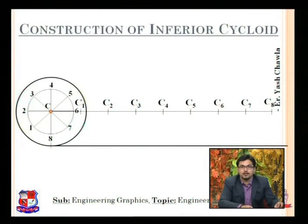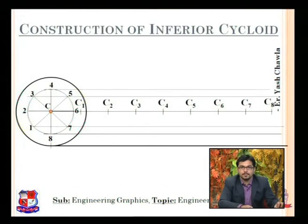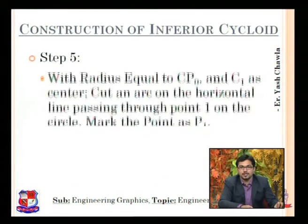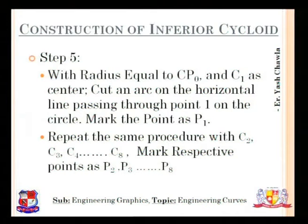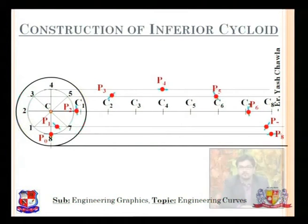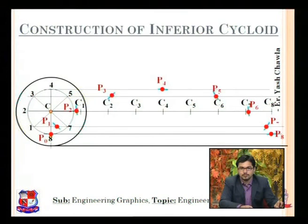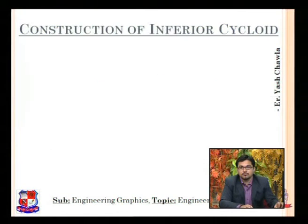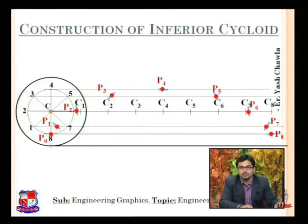Next, draw parallel lines through all these points as done previously. Then take the radius equal to CP0 and with center C1, cut an arc on the line passing through point 1. Repeat the same procedure for all points. These are the points received — I've made them appear quickly rather than animating, as we are short on time. A curve passing through all these points will be the required inferior cycloid.